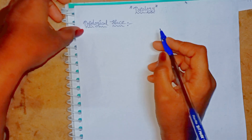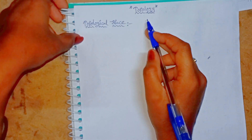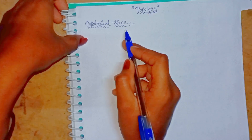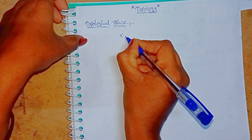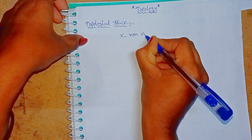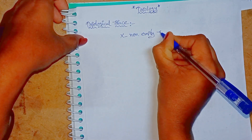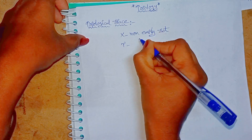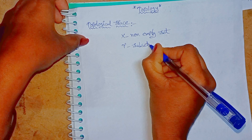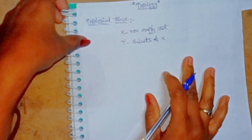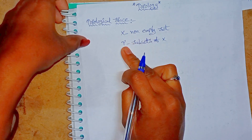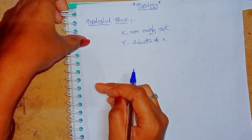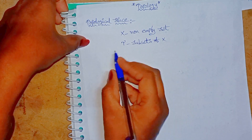Hi students, I am Swati. The topic is topology, which is the most important topic for MS standard. Here we cover theorems, definitions, and examples. Let us consider X is any non-empty set and tau be a collection of subsets of X. X is said to be a topological space on X if it satisfies the following three conditions.